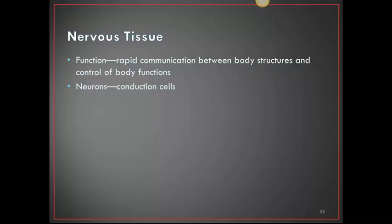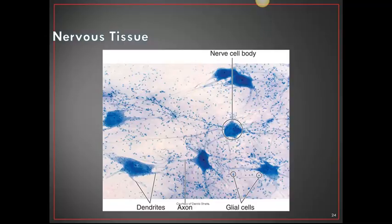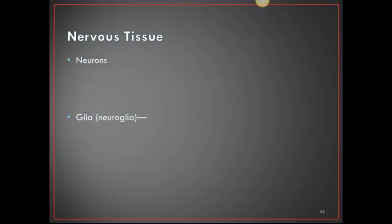Nervous tissue functions in rapid communication between body structures and control of body functions. Neurons are the conducting cells — functional units with special connecting and supporting cells called glia. Nervous tissue shows the nerve cell body, axon, dendrites, and glial cells. All neurons have a cell body and two types of processes: an axon, which carries nerve impulses away from the cell body, and dendrites, which carry nerve impulses toward the cell body. Glia support and connect cells.